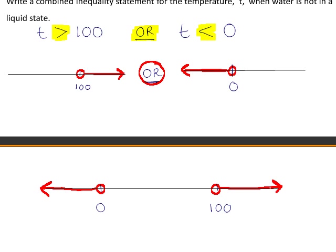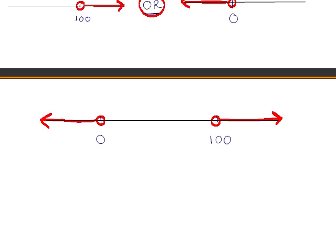This is what our solution set looks like on the number line. We write that T is less than 0, and to represent the word OR we use the union symbol, then T is greater than 100.